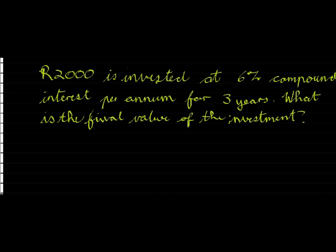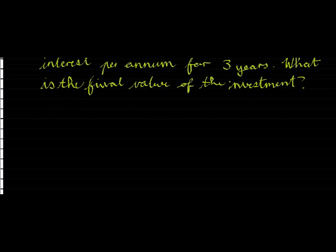2,000 Rand is invested at 6% compound interest per annum for 3 years. What is the final value of the investment? Once again, try and always start with the correct formula. So in this case we know our formula because it's compound. My future value A is my principal P multiplied by the bracket that contains 1 plus my interest i with an exponent of n.